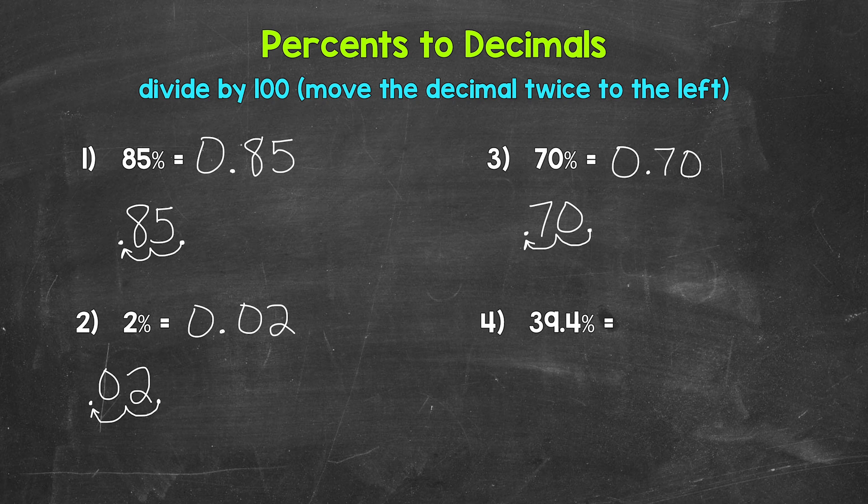Now one more thing I do want to mention about number three. Remember, zeros to the right of decimal digits do not change the value of anything. So really, we can write this as 0.7 as well, so 7 tenths. So we took that zero on the end off. These decimals are equivalent, so they are both correct. So that's something to be aware of when working with decimals.